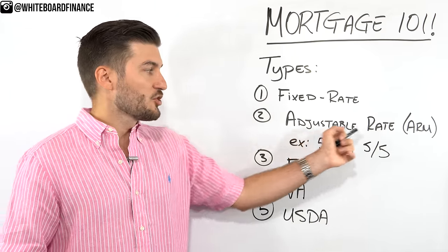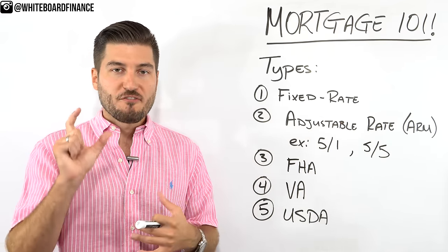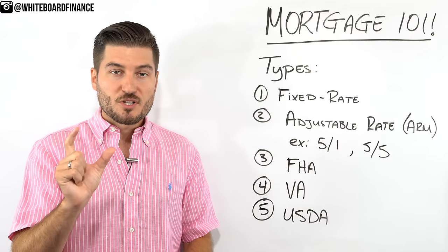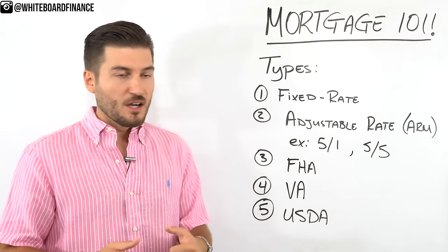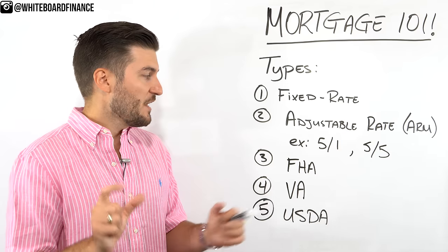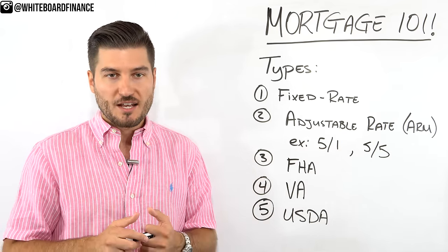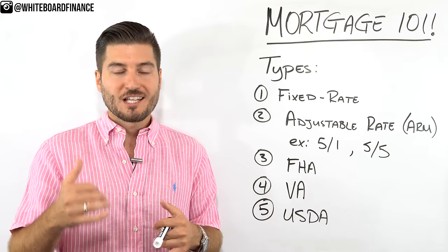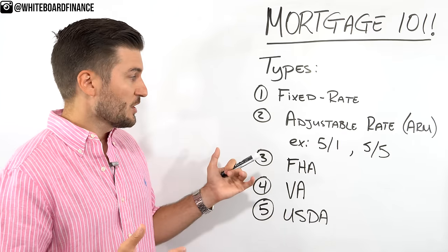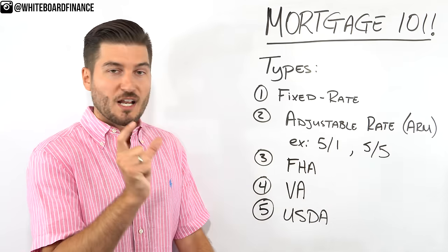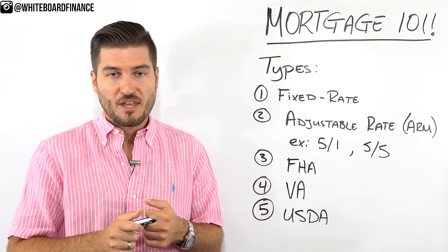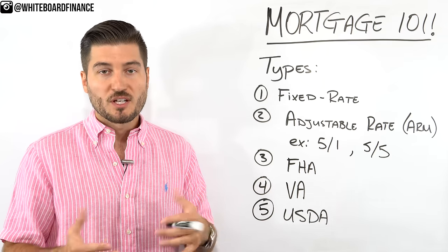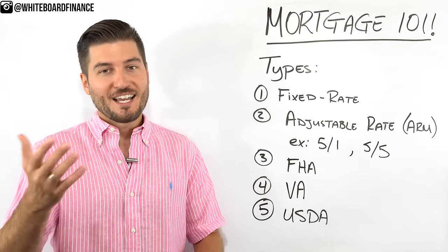Number two is the Adjustable Rate Mortgage, or ARM. This has a rate that's fixed for a specific period of time and then adjusts over time. For example, a 5-1 ARM means the first five years is fixed, and then it adjusts annually every year after that. These are typically based on the one-year Treasury bills or LIBOR — the London Interbank Offered Rate. A 5-5 ARM is fixed for five years and then adjusts every five-year period after that. This typically benefits people who don't plan to hold the mortgage long or who believe interest rates will be going down.